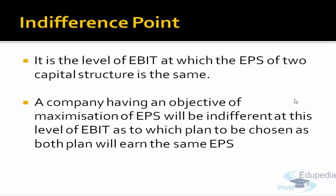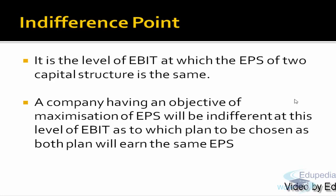To explain it, let's say there is one equity plan or the equity capital structure for a company at a certain level of EBIT. At the same level of EBIT, the company also has another plan, which is a debt-equity plan where debt is also involved. But when you compute the earning per share from both these plans, they are same, so both capital structures could be opted by the company.